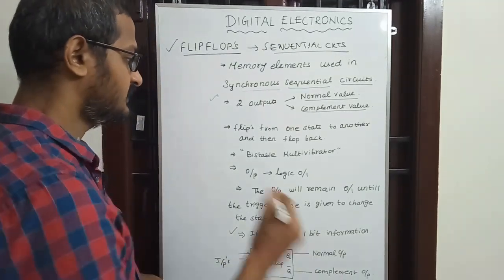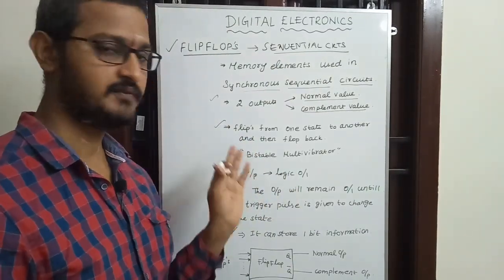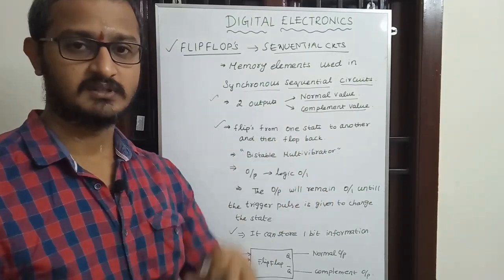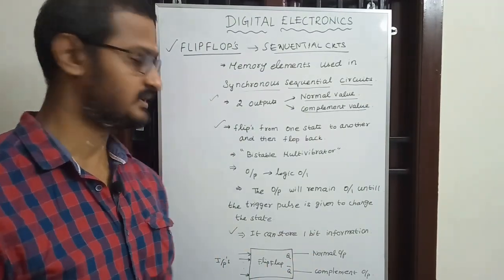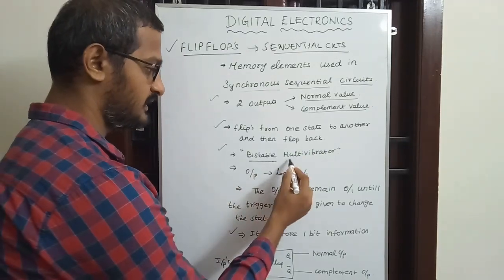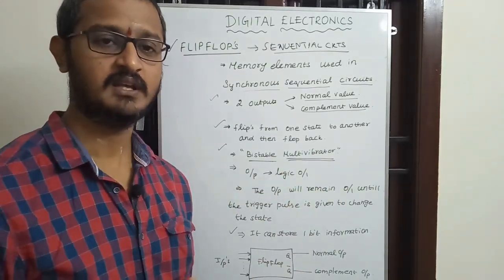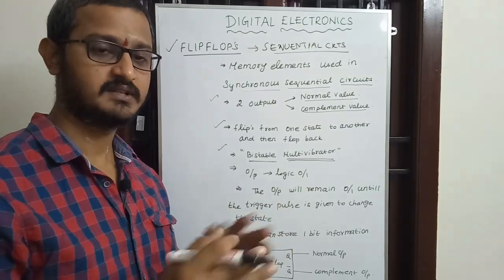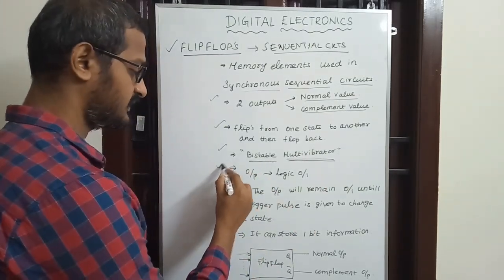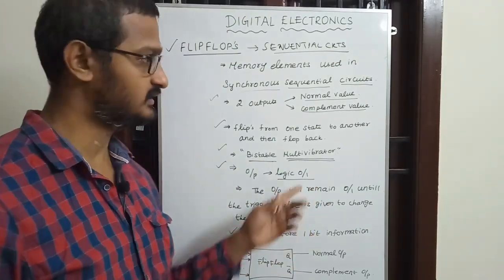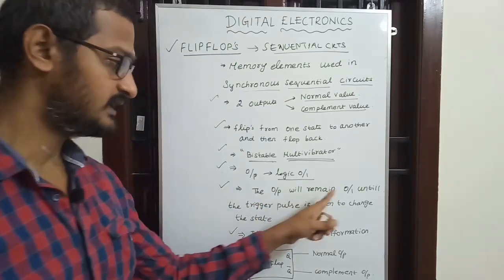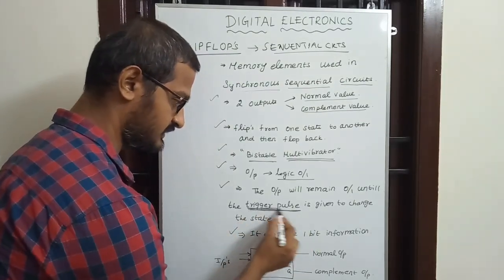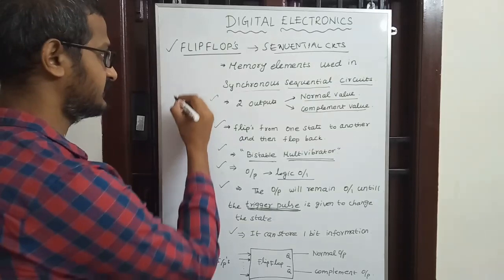A flip-flop flips from one state to another and then flops back. It is called a bistable multivibrator — very important. It has two stable states. The output will remain either 0 or 1 until a trigger pulse is given to change the state.